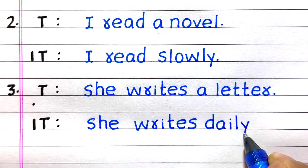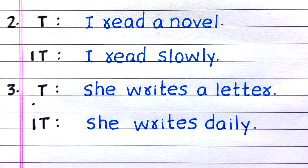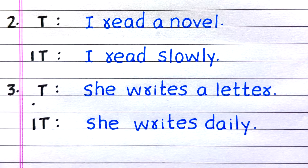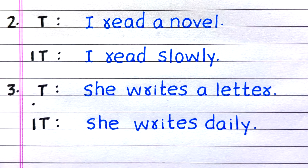Second example: 'I read a novel' is a sentence with a transitive verb, whereas 'I read slowly' is a sentence with an intransitive verb.